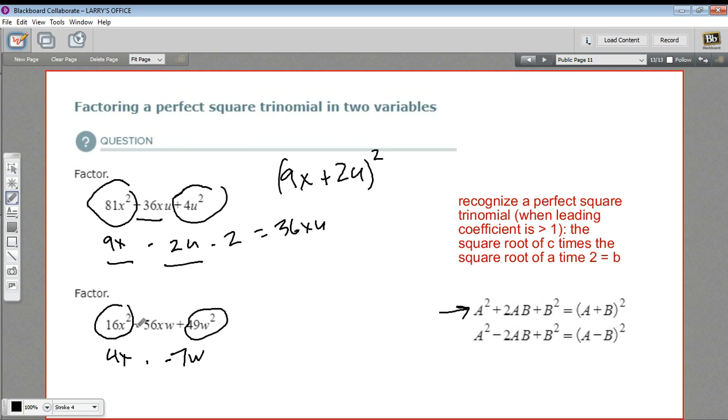We're going to have a negative here. And if we multiply, because we've got a negative sign in the middle, if we multiply those two and then multiply them by 2, 4 times 7 would be 28 times 2, so we'd get a negative 56xw. Yep, that's the middle term. So this is a perfect square trinomial.